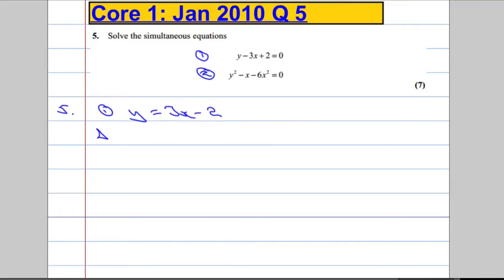And then what I'm going to do is I'm going to sub my new equation 1 into equation 2. And we're going to get now, instead of y I'm going to have 3x minus 2 to be squared minus x minus 6x squared is going to be equal to 0.